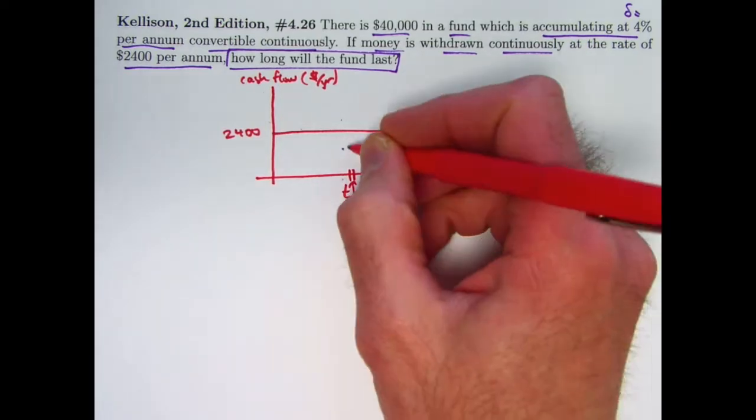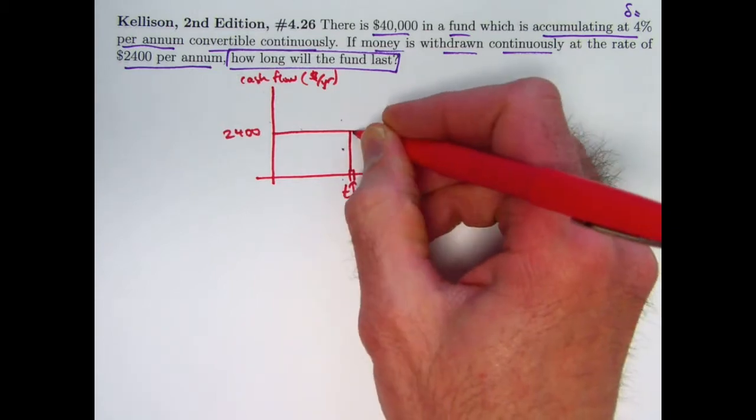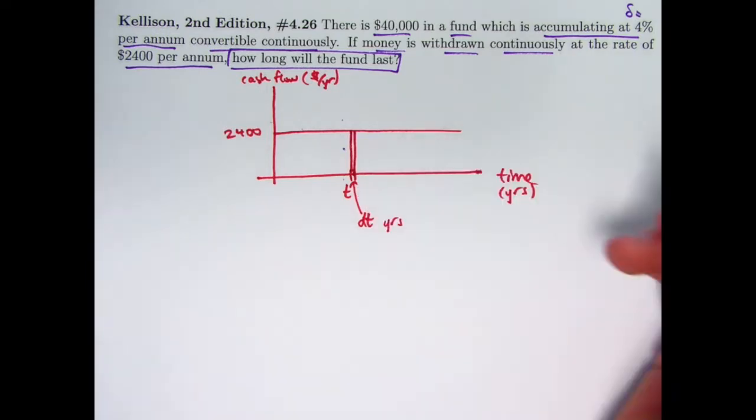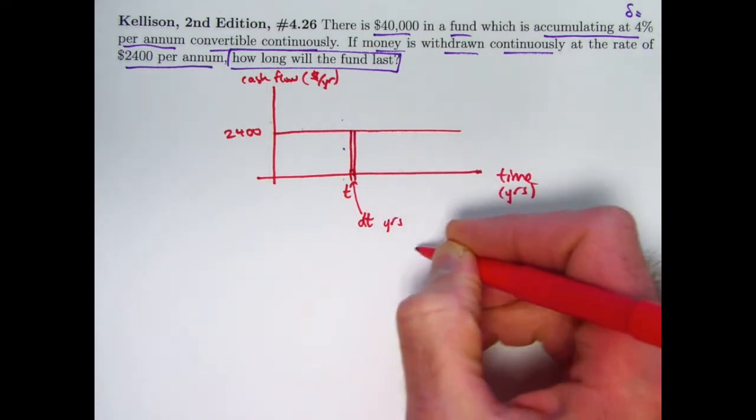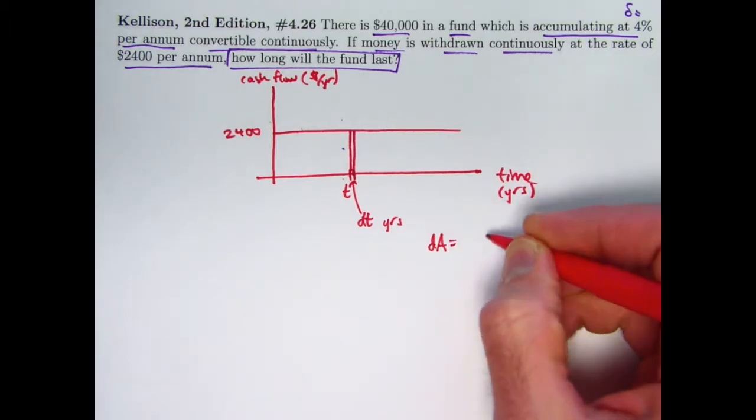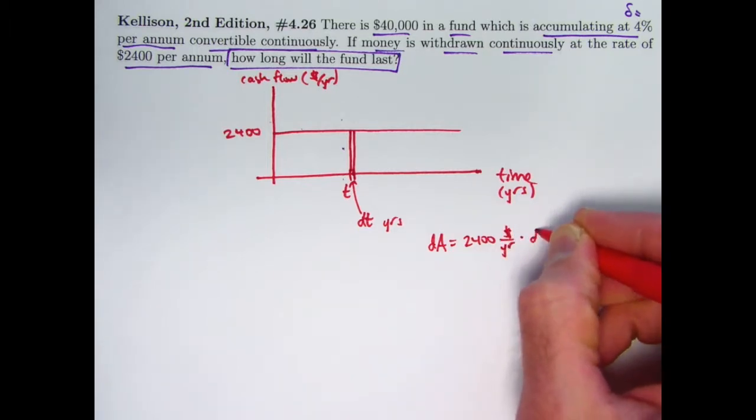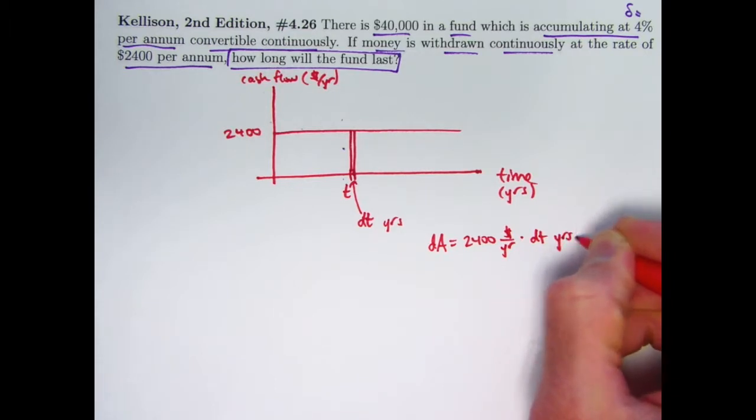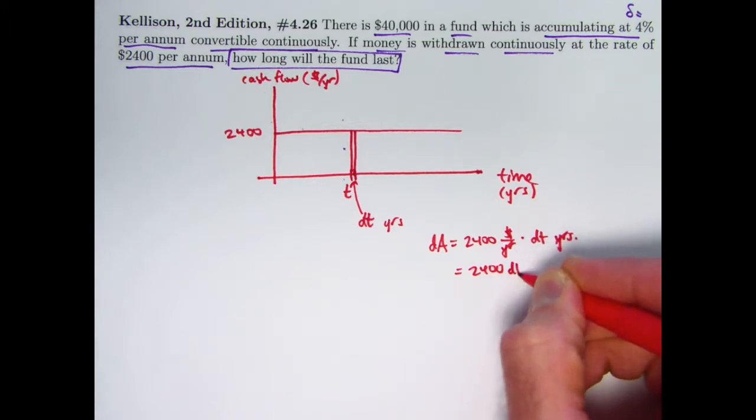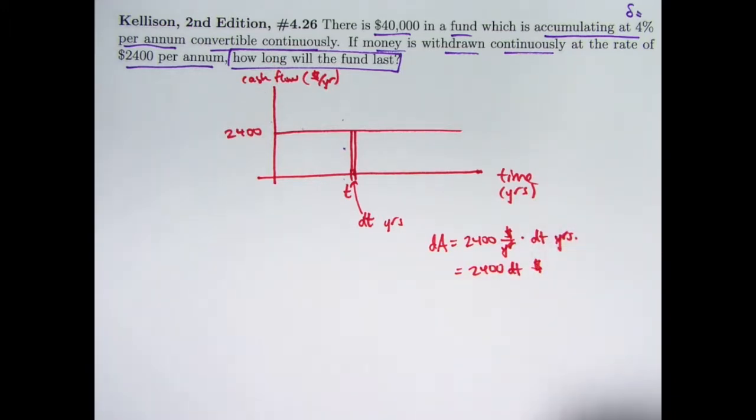How much cash flows during that tiny, tiny amount of time? It would be the height of the rectangle times the width. It would be the area of the rectangle. The tiny amount of money that would flow, which you might call dA, during that tiny amount of time would be $2,400 per year times dt years. The years would cancel, and you'd be left with $2,400 dt dollars. It would be the tiny amount of money that would flow, or be withdrawn in this case, during that tiny amount of time.